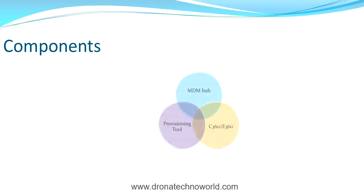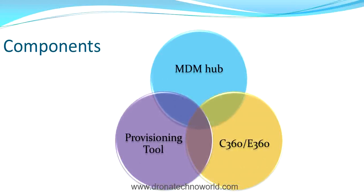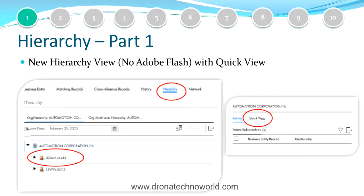The features introduced in 10.4 are not only on the MDM hub side but they also include changes in the provisioning tool and the UI — that is the Customer 360 or Entity 360 application. The very first change introduced in 10.4 is the hierarchy. The way we configure hierarchy in the MDM hub — configuring the entities, relationships, and hierarchies — that whole process has changed with 10.4.